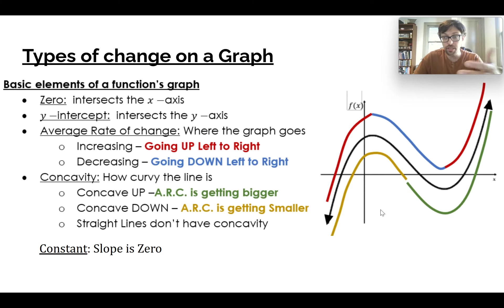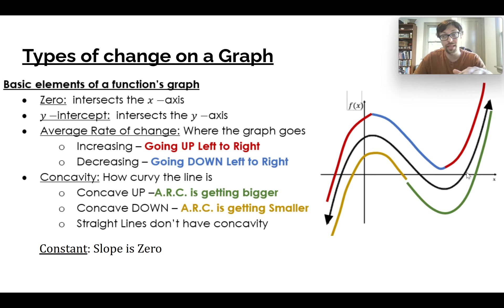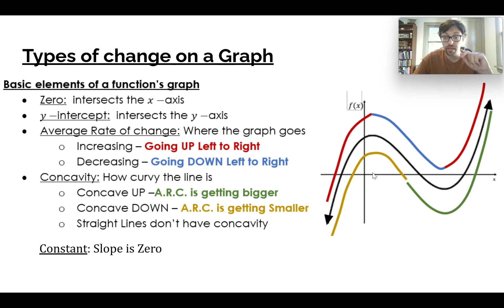This is a graph that we're going to talk about generally. A zero is wherever we're touching the x-axis — so here, here, and here. The black line is my function. The y-intercept is wherever we're touching the y-axis, and we should only ever have one y-intercept, but we can have multiple x-intercepts.